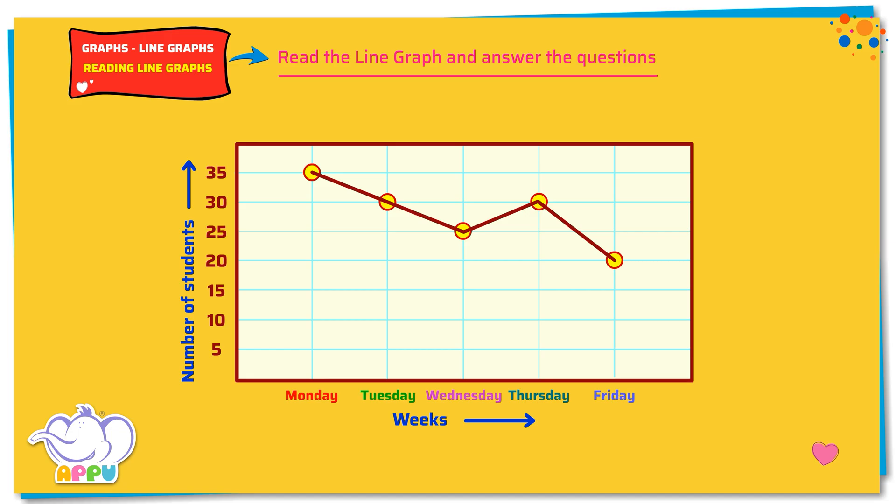The line graph is about the number of students in a class during one of the weeks. In this line graph, we have days of the week at the bottom. And for every day, we have a dot representing the number of students.